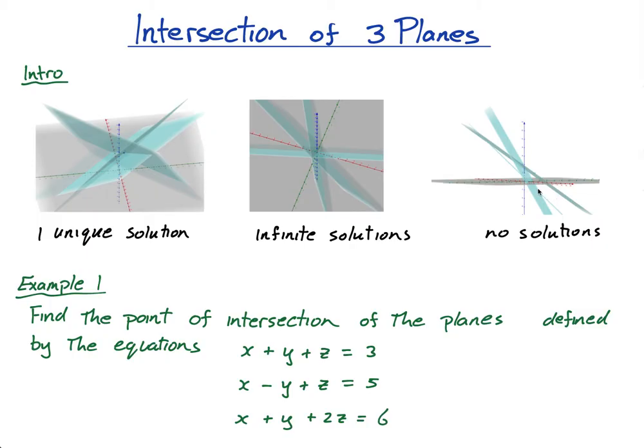Now this intersection of planes is very much related to and connected to the system of linear equations lessons that I've done in the past. So when I have this system of linear equations with three variables, what I have is three planes. The system of equations is describing three different planes. So if you haven't looked at that lesson or you're not familiar with that lesson, you have to go and do that first.